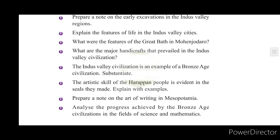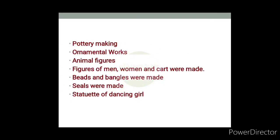What are the major handicrafts that prevailed in Indus Valley Civilization? In Indus Valley Civilization, they made pottery, ornamental works, animal figures, figures of men, women, and carts. Beads and bangles were made. Seals were made. Statues of dancing girls were also produced. This is evidence of a Bronze Age civilization.